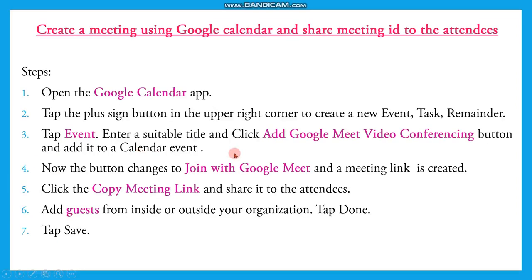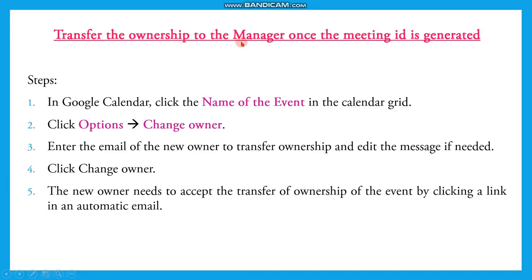After copying the meeting link and passing it to the attendees, the second part of the program is to transfer the ownership. This is the algorithm steps for the first part — to create a meeting ID — and this is the second part — to transfer the ownership. For that, you have to go to Google Calendar, click the name of the event in the calendar grid, choose the option 'Change Owner', and enter the email ID of the person to whom you want to transfer ownership. Once that person accepts the transfer, they become the new owner. Until their acceptance, the person who created the meeting remains the owner. Now we will see the demo.